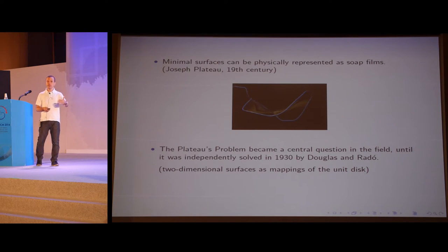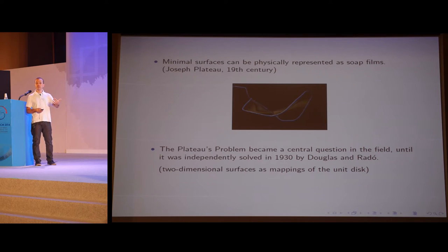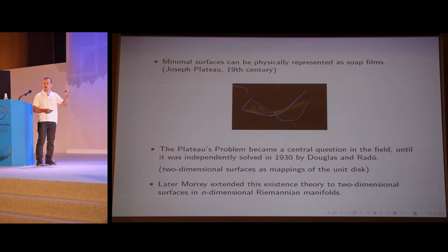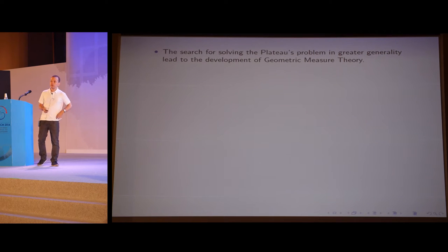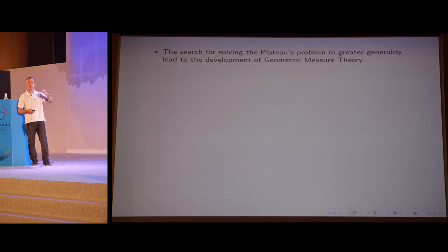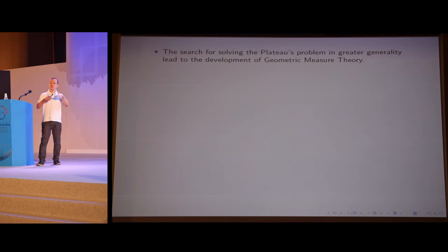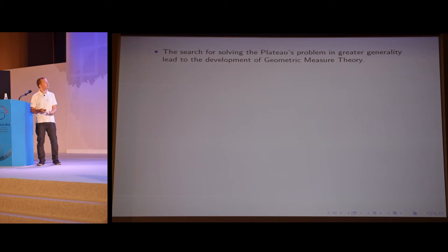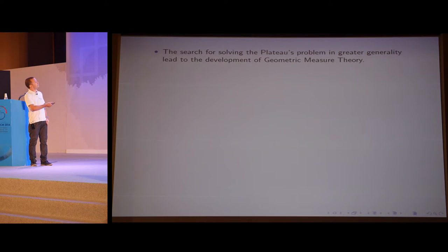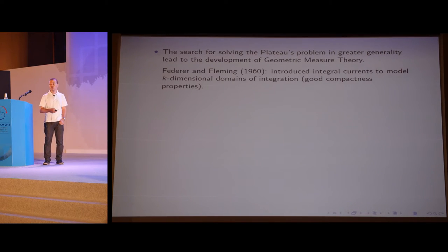The surfaces they considered are always given by mappings from the unit disk in two dimensions. One can also solve the Plateau problem in Riemannian manifolds as well. The search for solving the Plateau problem in greater generality, by allowing arbitrary topological type and also arbitrary dimension, led to the development of geometric measure theory. The idea is to interpret surfaces in some measure-theoretic sense, so that one could replace smooth surfaces by more general objects which satisfy better compactness properties.